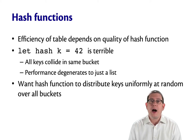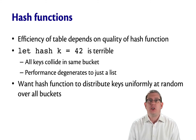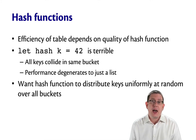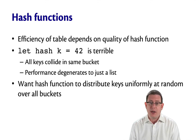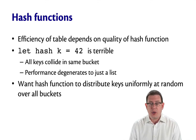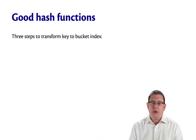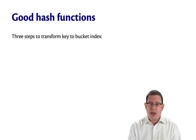The performance of a hash table depends upon the hash function. We need a good hash function in order to achieve an efficient hash table implementation. A hash function that's just a constant would be terrible because all keys would collide in the same bucket. We need the hash function to distribute the keys uniformly at random over all the buckets. There are really three steps to transforming a key into a bucket index.